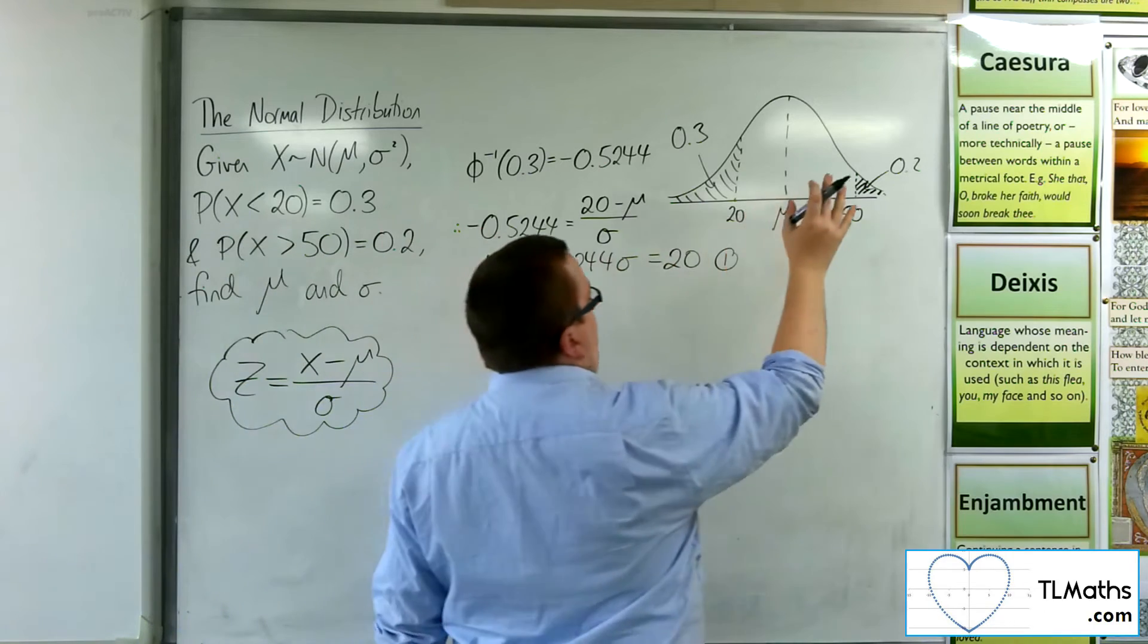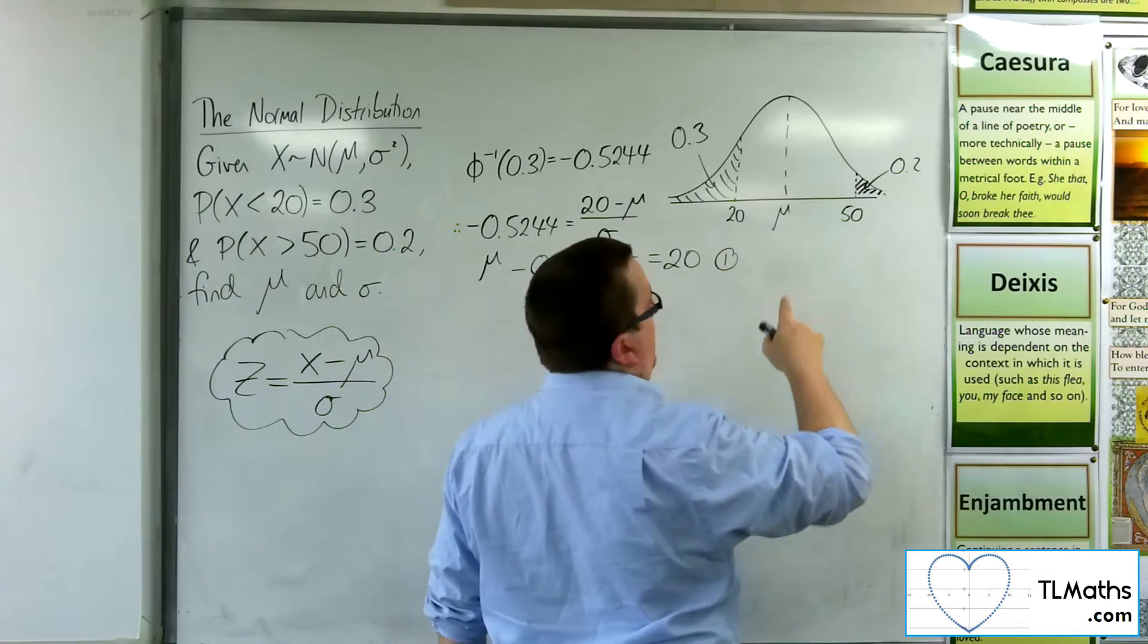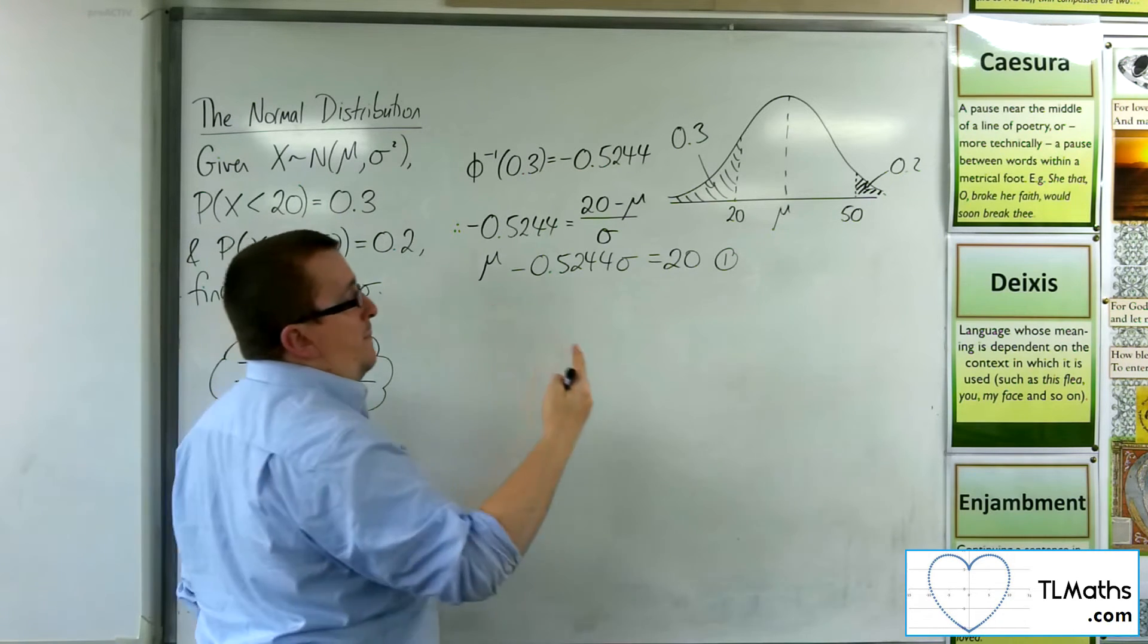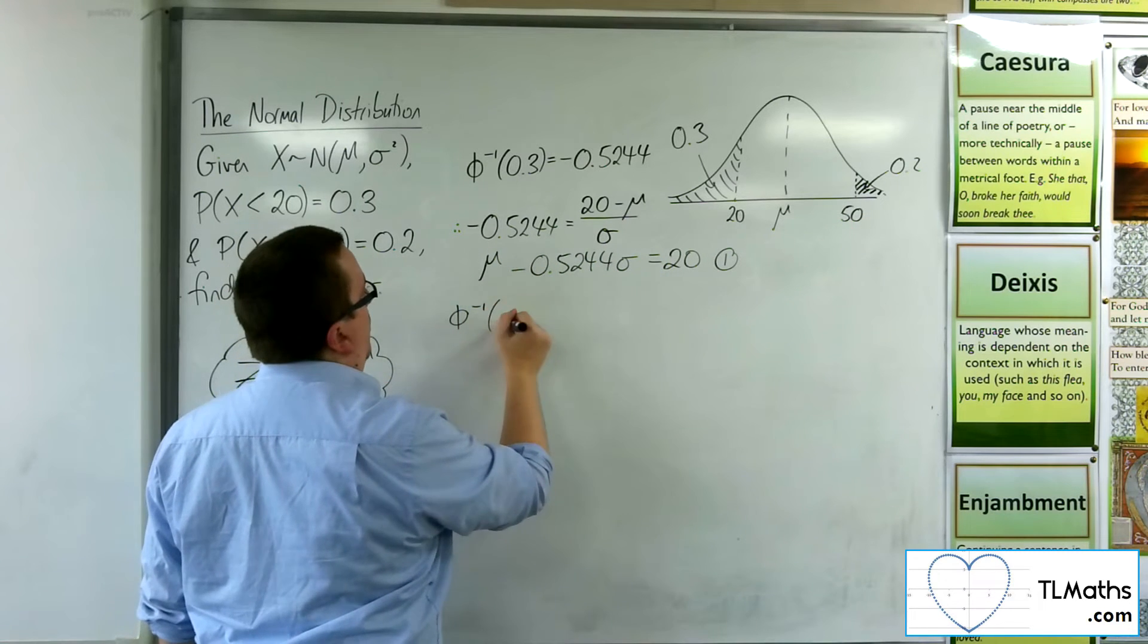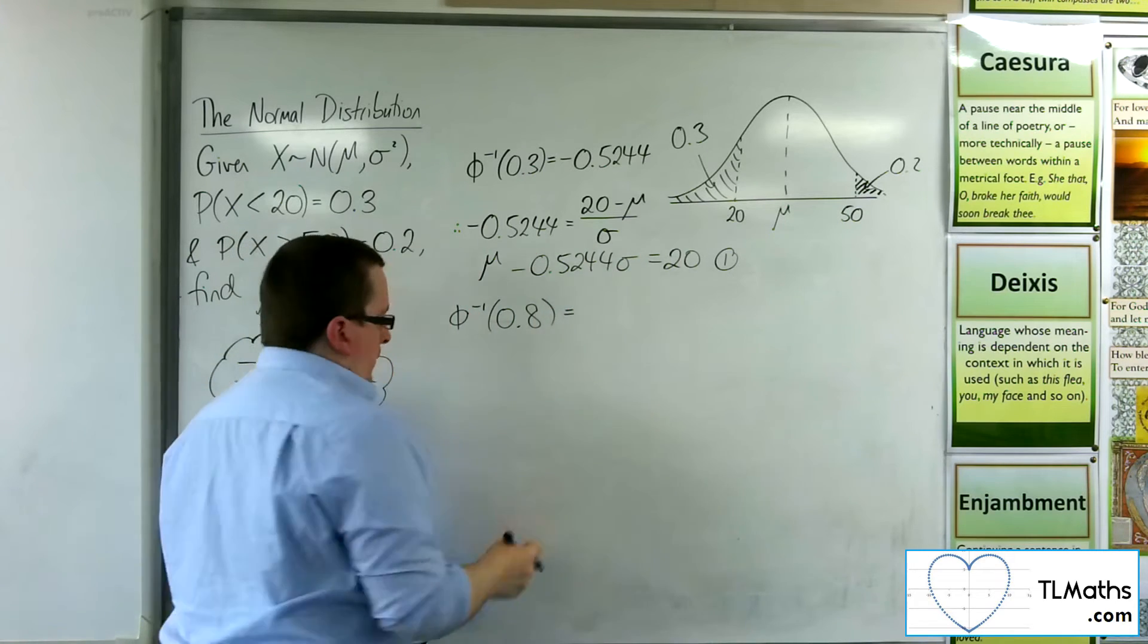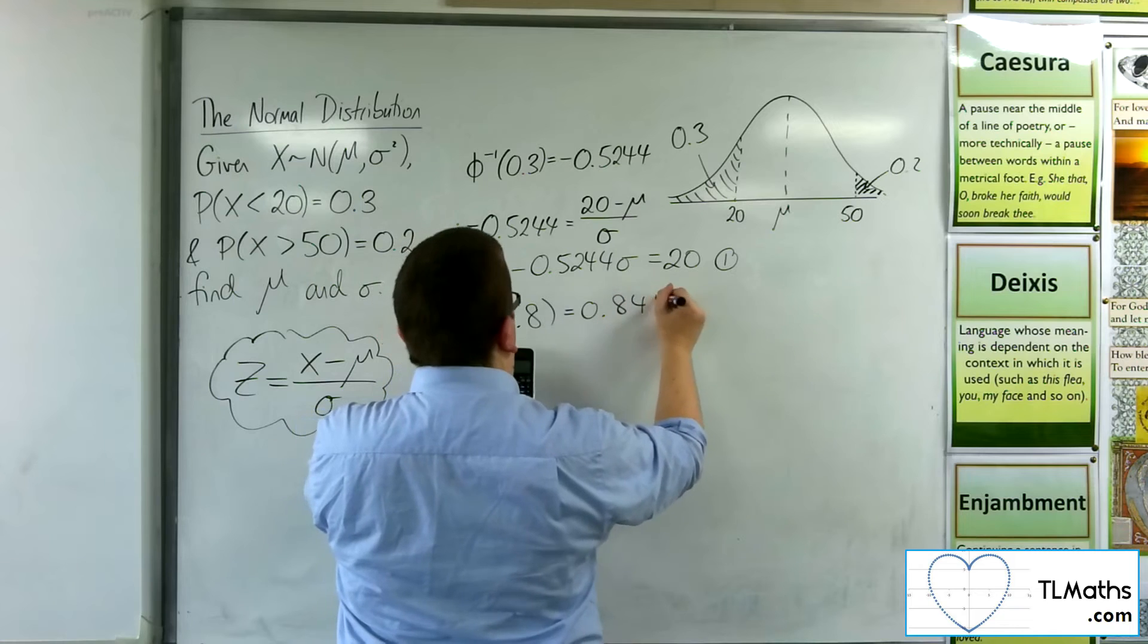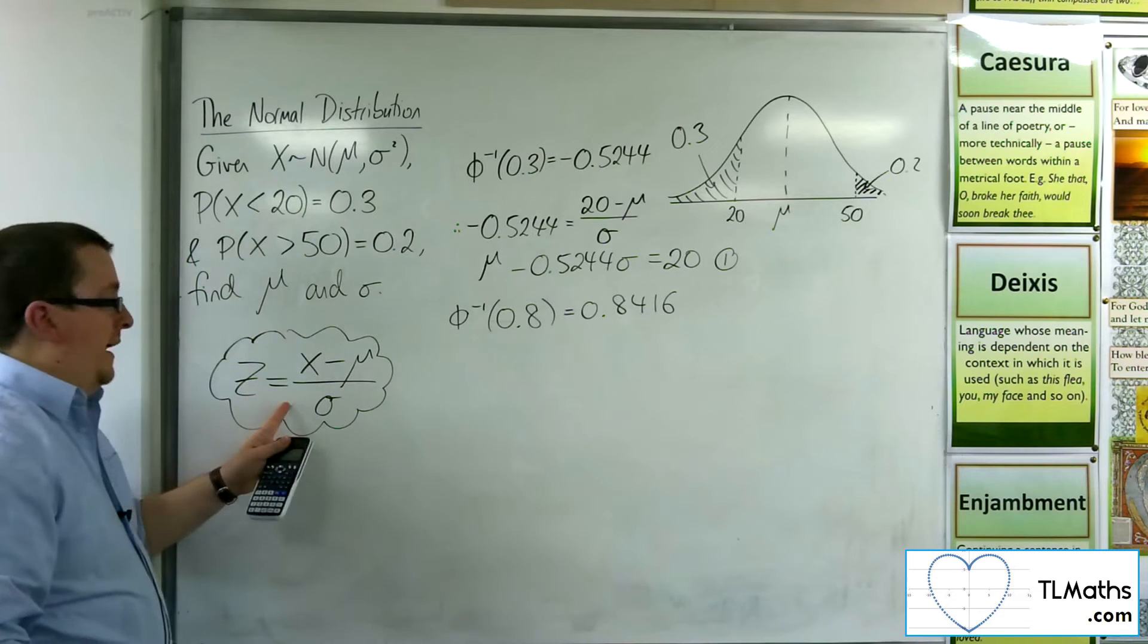Now I'm going to utilize the second bit of information. So I'm told that 20% are larger than 50. It is equivalent to say that 80% will be less than 50. So remember that the area only looks at less than. So I'm going to inverse norm 0.8 to look at 80% being less. So when I go on to inverse norm 0.8 as the area, σ is still 1, μ is 0. So I get 0.8416 to 4 decimal places. This is the z value in our formula.